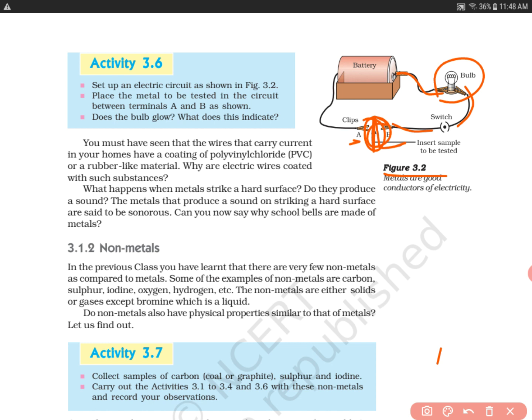In Activity 3.5, we learned that metal's melting point is high. We learned that wax will melt but the metal pin will not melt. From this, we learned that metals are good conductors of heat. But in this activity, we also learned that metals are good conductors of electricity also.